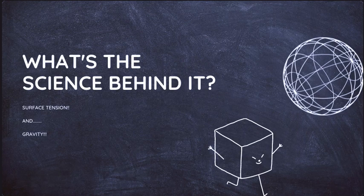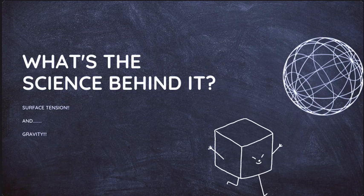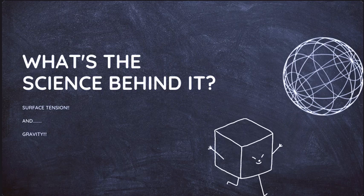There's two parts of science behind it: surface tension and gravity. Surface tension is when an object is actually trying to have the smallest surface area but still have the same amount of volume. If we know a little bit of calculus, we know that spheres are the best shape for this to actually happen.